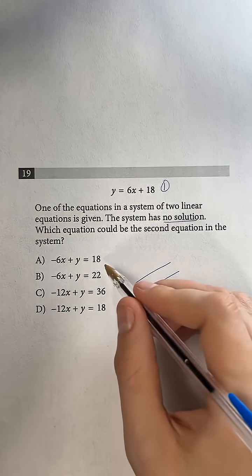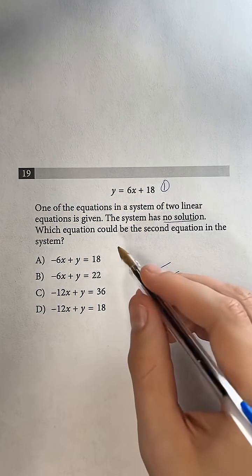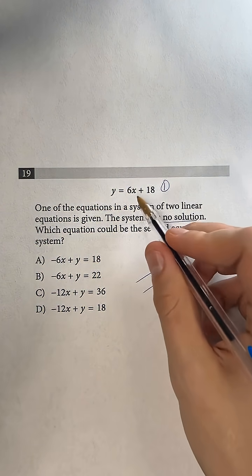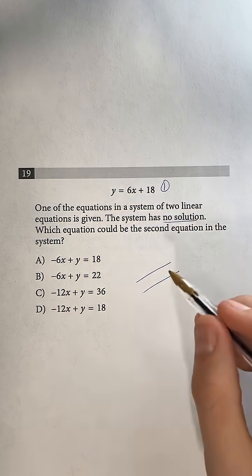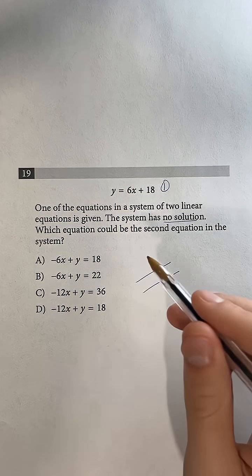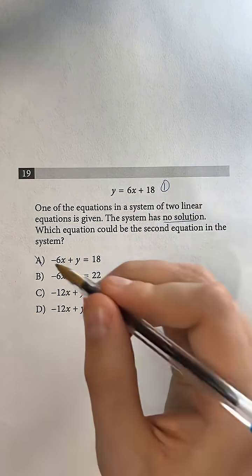So we can see that for this first equation, if we move the 6x over, we would have y equals 6x plus 18, which is the exact same as our original equation. So those would not have no solutions. If A was the answer, they would actually have infinite solutions. So it's not going to be A.